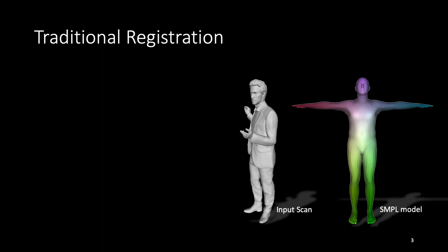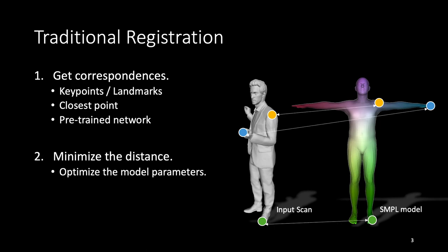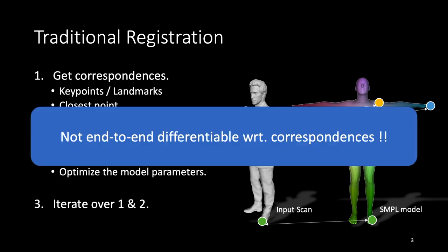Let's start by reviewing a typical registration pipeline. First step is to get correspondences from the input scan to the parametric model. Step two is to optimize the model parameters to minimize the distance between the scan point and the estimated corresponding point. Finally we iterate over steps one and two, but this iterative formulation is not end-to-end differentiable with respect to correspondences.